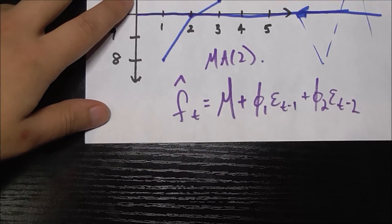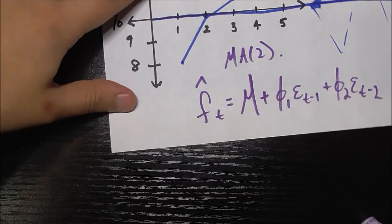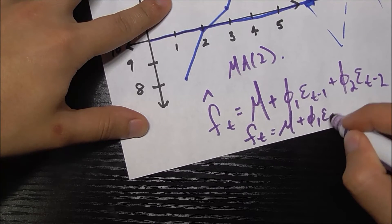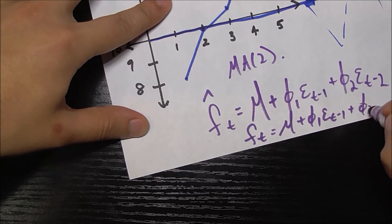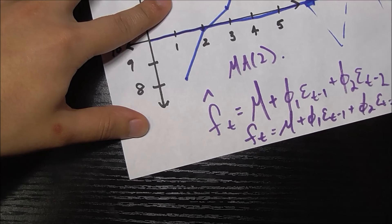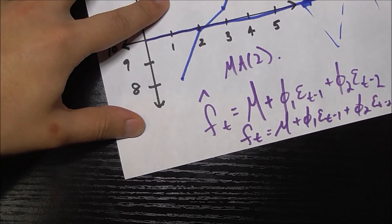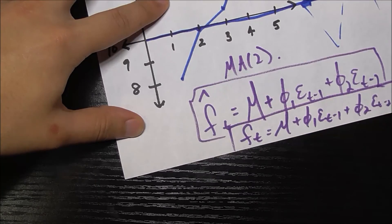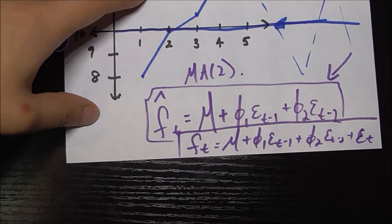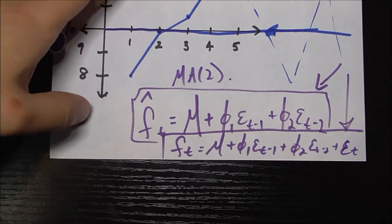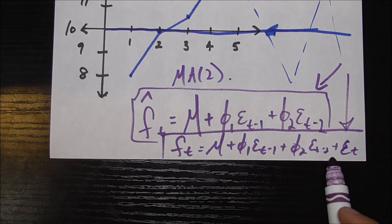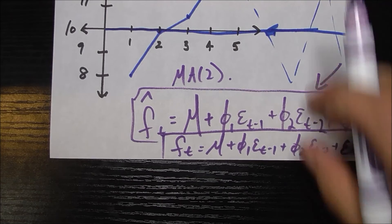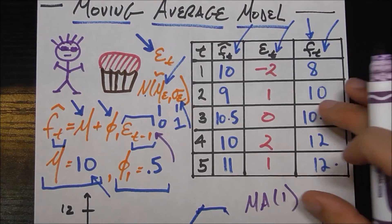Now, just to give a quick note on what the actual number of cupcakes you needed would be, that would be f of t, that would be mu plus phi sub one, e t minus one plus phi two, e t minus two, plus error in the current time period. So here is your predicted number of cupcakes in a given time period. And this is how many you actually needed, which is basically just your prediction, plus the professor's error from that current time period.